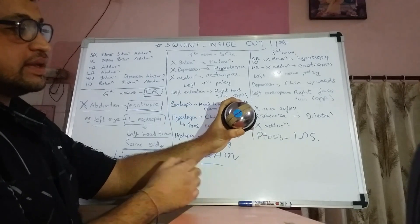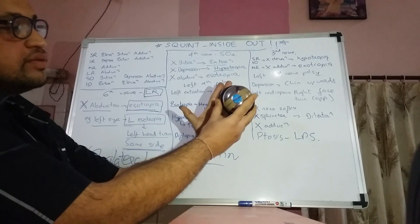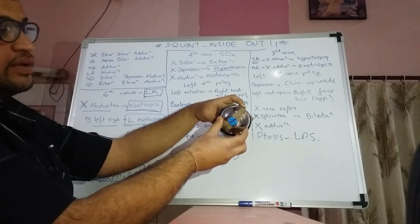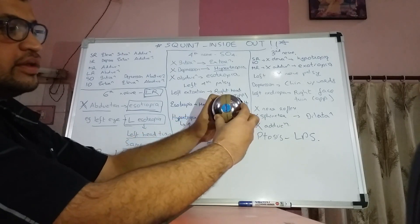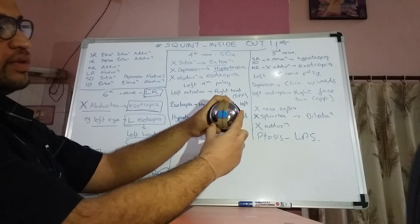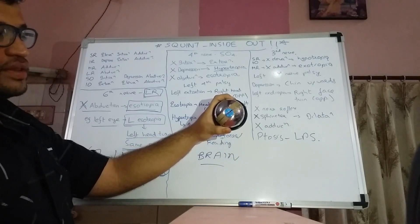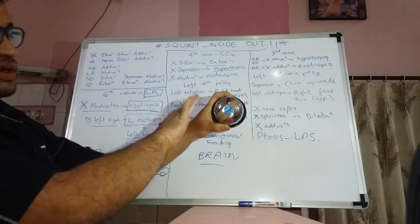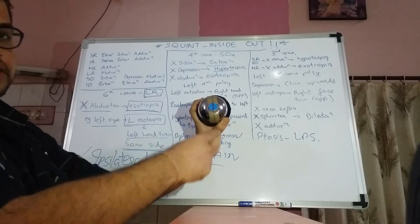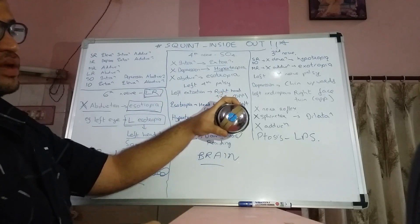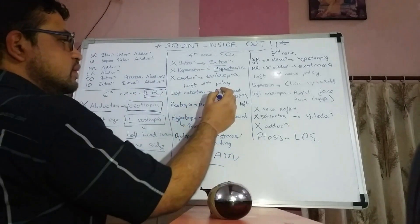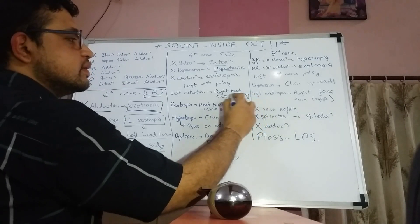To accommodate left-sided extorsion, the head tilts towards the opposite side — the right side. As the orbit tilts with the face towards the right, the axis is restored to normal. So in left-sided fourth nerve palsy with extorsion, there is contralateral (opposite side) head tilt.